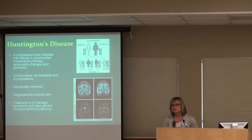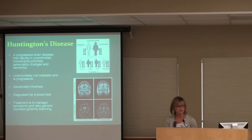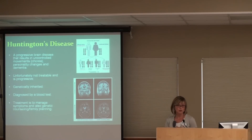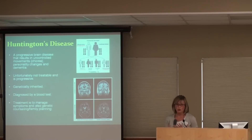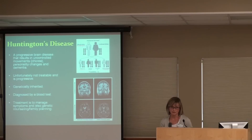Speech too can be affected — Huntington's, because it affects muscle movements, will affect speech and cause slurring. Unfortunately we don't have a treatment to stop the progression of this disease. However, it was one of the first genetic diseases for which the gene was really discovered. There's a very easy way for us to diagnose Huntington's — we can send a blood test for it, a luxury we don't have with other movement disorders. There is a blood test that can test for the Huntington's gene.